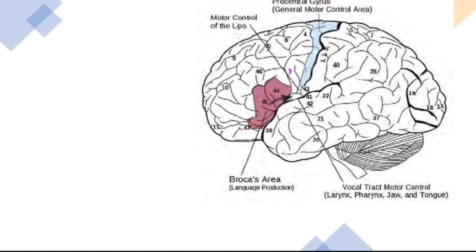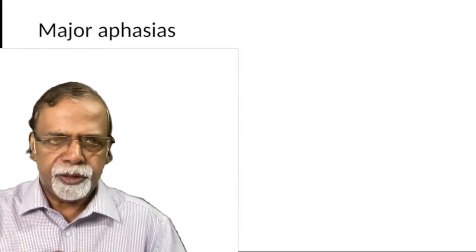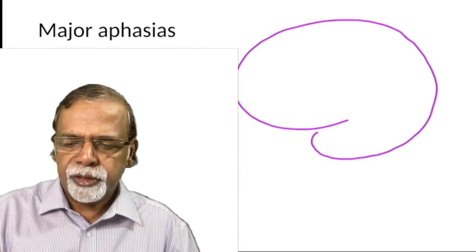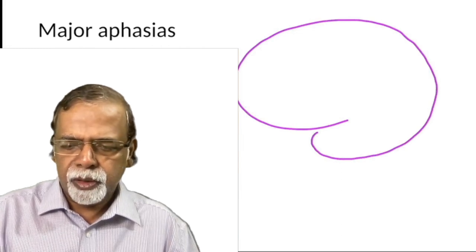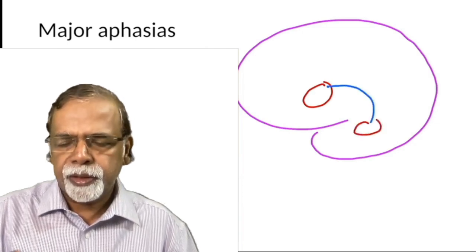It is better to remember the Brodmann area numbers. Broca's area is areas 44 and 45 — the motor speech center. Wernicke's area is area 22. When there is a problem in the perisylvian region concerned with this circuit — the Broca's area, Wernicke's area, and their connection — you get the major aphasias.